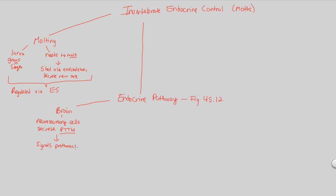PTTH — pro-thoracicotropic hormone — signals the pro-thoracic gland to produce something. This is a pathway, so we're going to have constant production and secretion. The production is going to be of ecdysteroid. The root 'ecdi' refers to molting and shedding. The pro-thoracic gland knows to do this because the brain sent it the PTTH neurohormone to tell it to take the following steps.